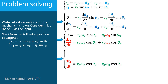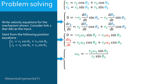Solving these two equations is straightforward. From the first equation, omega 3 is equal to minus R2 times omega 2 times sine theta 2, over R3 sine theta 3. Then, substituting the expression of omega 3 just obtained into the second equation and simplifying gives: d R4/dt = R2 omega 2 times the quantity cosine theta 2 plus sine theta 2 over tangent theta 3.